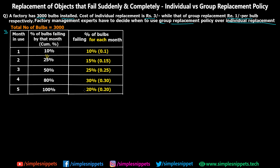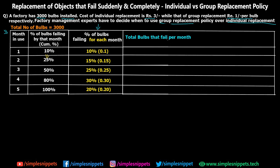Similarly we find all the values — for the last month it is 20% of the bulbs failing. In brackets I've also calculated the probability form: 10% is 0.1, meaning after one month the probability of bulbs failing is 0.1. Now, using this column, we find the total bulbs that fail per month. Total bulbs failing per month = 3000 × percentage failing that month. For the first month, 10% of 3000 = 300 bulbs failing. So in the first month, 300 bulbs are going to be failing.